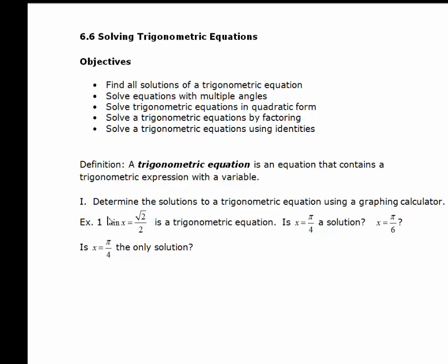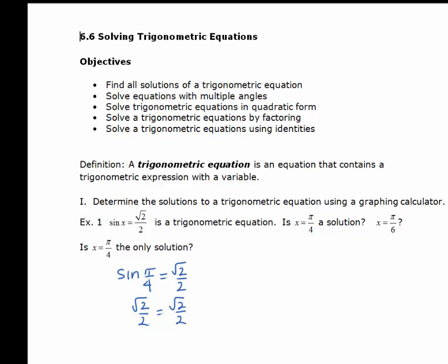Let's look at example 1. We know that sin x equals the square root of 2 over 2 is a trigonometric equation. The question is: is x equals pi over 4 a solution? Generally, to see if a value is a solution to an equation, you substitute. We take the original equation and substitute pi over 4 in for x, and sin of pi over 4 is the square root of 2 over 2. When you substitute a value into an equation and the result is an identity, you have a solution.